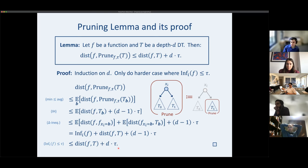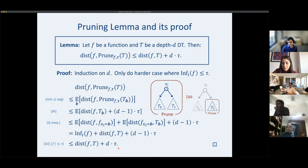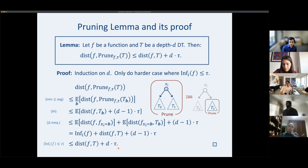To achieve epsilon error, we choose tau to be roughly epsilon over D. Then D times tau equals epsilon. The total influence bound on a size-s decision tree gives at most D-squared variables of high influence, with D-squared being roughly log-s — meaning K equals poly-log-s suffices.